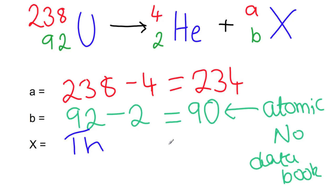So if you were to write the full nuclide notation, you would have Th, 90 at the bottom, and 234 at the top.